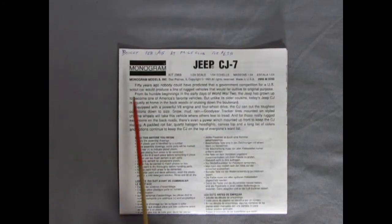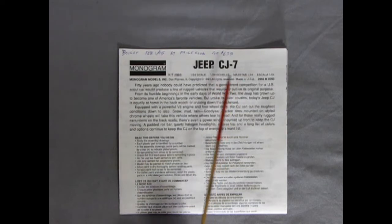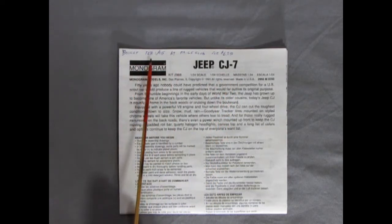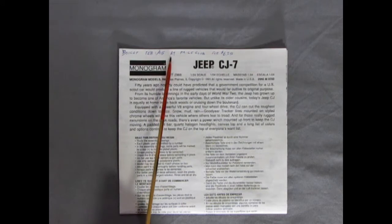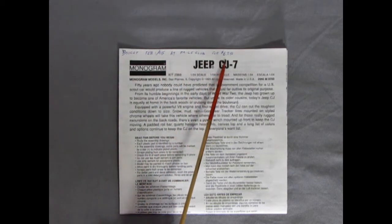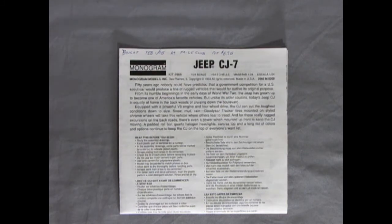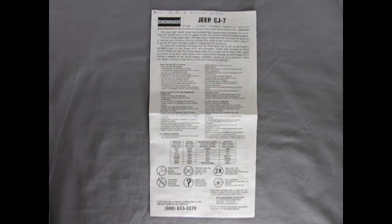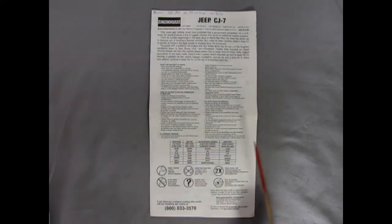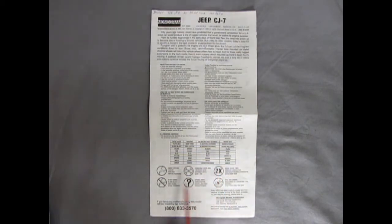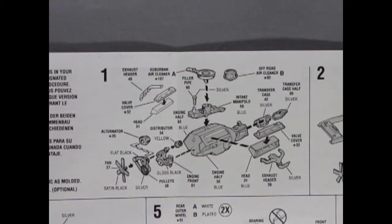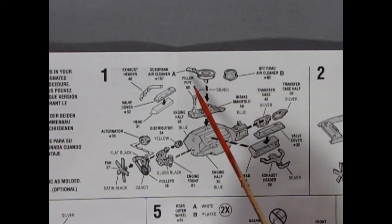Here we have our instruction sheet from the Monogram Jeep CJ-7, and I bought this a very long time ago, February 1st, 1995, at a place called Price Club, for $6.95. And if you were to get this model kit today, it would at least be $38 Canadian. The instruction sheet unfolds just like a map, and on the front here we have a nice little paint chart, as well as the symbols we need to understand in order to build this model kit. Our model kit includes this amazing AMC engine, which is, of course, universal to both versions of this kit.